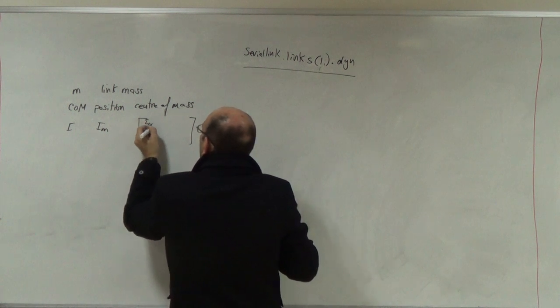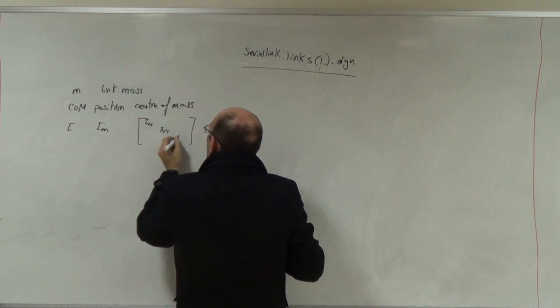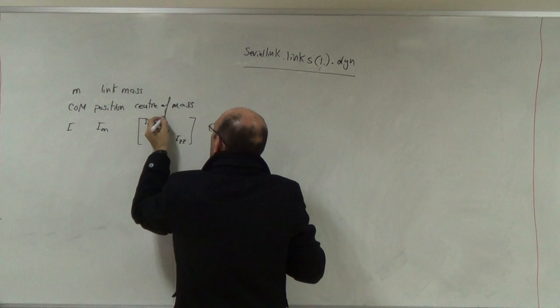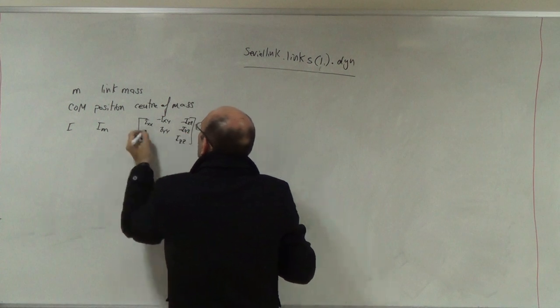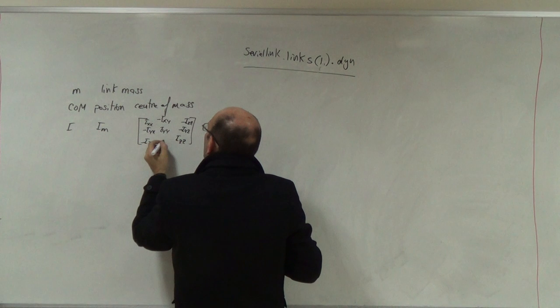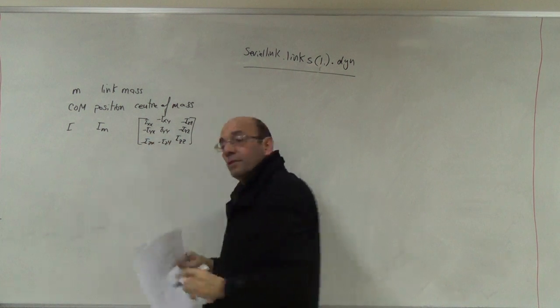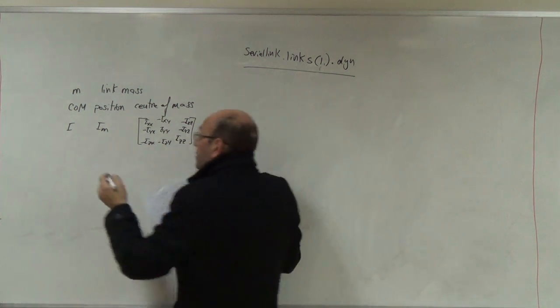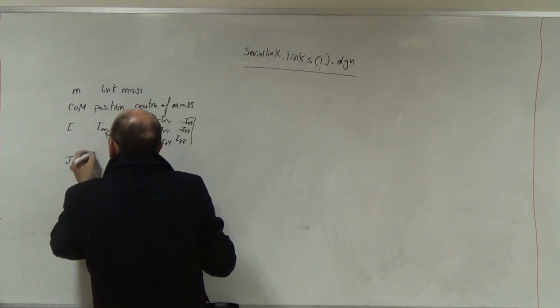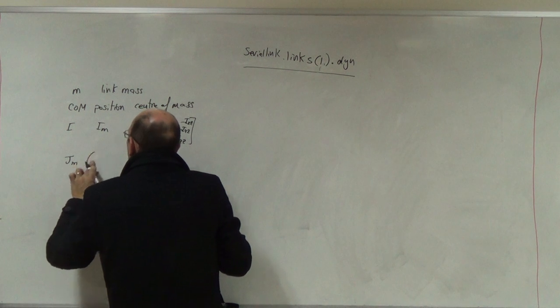So it will be IXX, IYY, IZZ, and minus IXY, and minus IXZ, and minus IYZ, and minus IYX, and minus IZX, and minus IZY. It will give me the nine numbers as IM, and when you print it, it comes out as three by three.